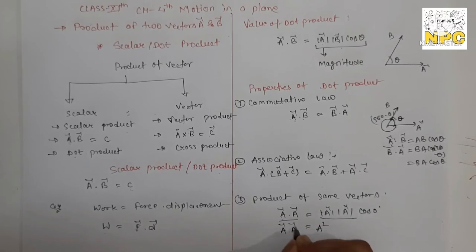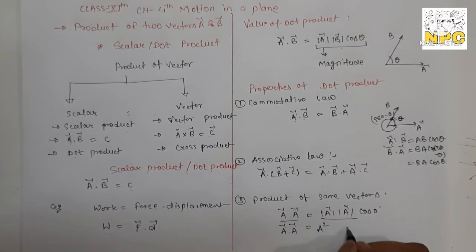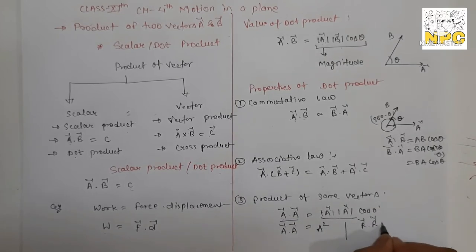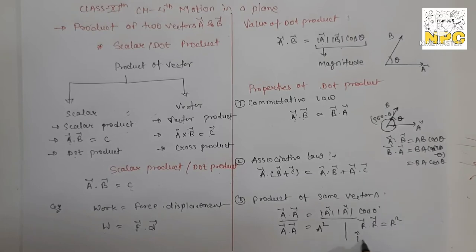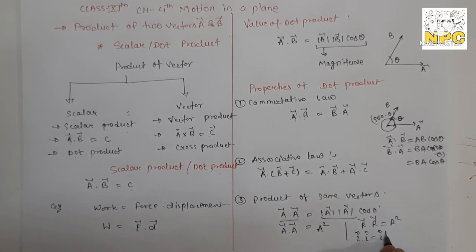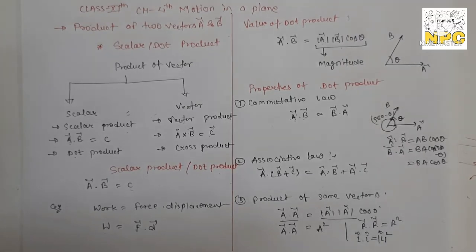So a dot a equals the magnitude of a squared. Similarly, r dot r equals r squared, and i dot i equals 1 squared — the square of the magnitude. This is an important property.